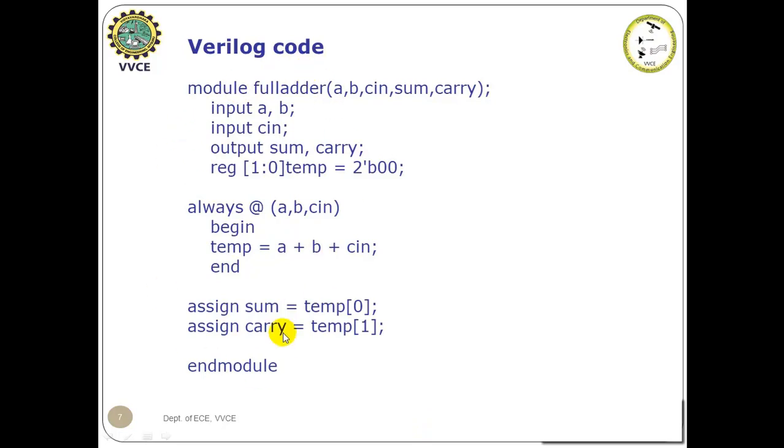This is the Verilog code of full adder. It starts with the keyword module, name given as full adder, the port list, A, B, Cin are the inputs, sum carry are the outputs, temp is the variable declared as REG, 2 bit variable initialized as 00, always at sensitivity list A, B, Cin whenever any of the input changes, temp will be equal to A plus B plus Cin. Before the module is entered, the LSB bit of the temp is assigned to sum output and the MSB bit of temp is assigned to carry output.